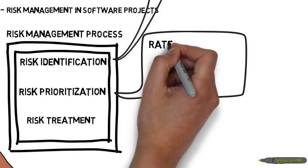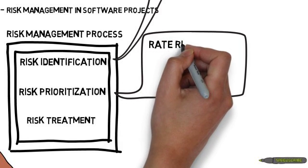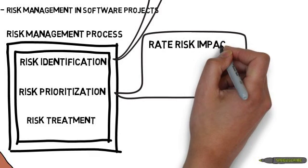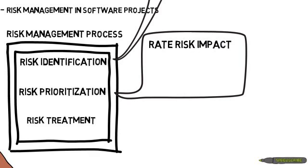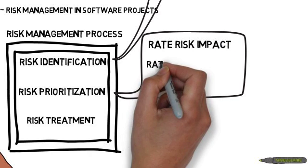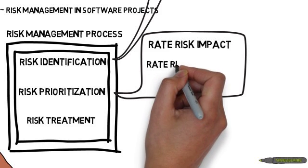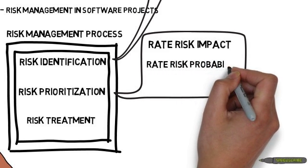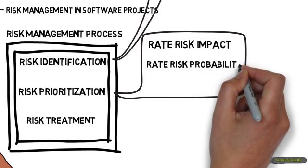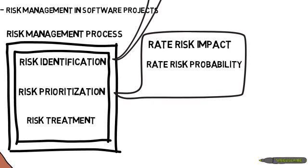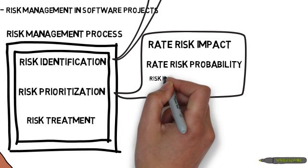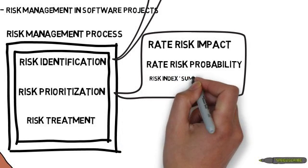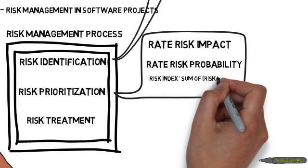Risk prioritization is simple if the risk is understood correctly. There are two things to consider: risk impact and risk probability. You can give a rating of low, medium, or high to each one, and multiply them to give you the risk index for each particular risk.